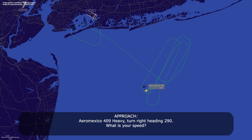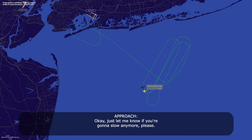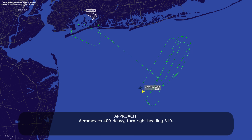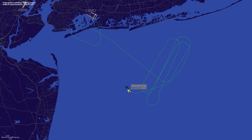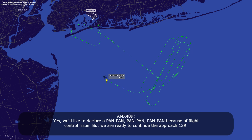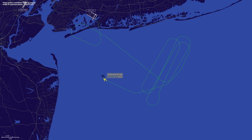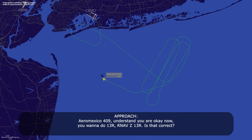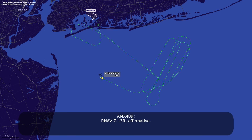Mexico 409 heavy, turn right heading 290, what is your speed? Mexico 409 heavy, what is your speed? 199 knots. Okay, just let me know if you're going to need anything more. Mexico 409 heavy, turn right heading 310. Right heading 310. We would like to declare pan-pan, due to a flight control issue, but we're ready to continue the approach. Aeromexico 409, understand — you are okay, you want to do runway 13 right, RNAV Zulu 13 right, is that correct? RNAV Zulu 13 right, affirmative.